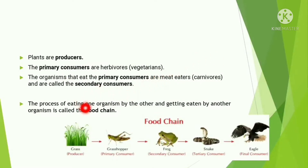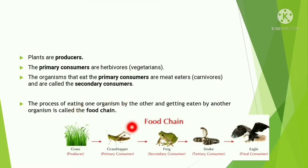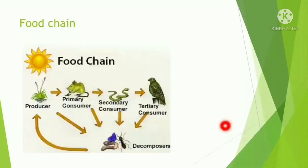The process of eating one organism by another, and getting eaten by yet another organism, is called the food chain. For example: grass is the producer; grasshopper eats the grass and is the primary consumer; frog eats the grasshopper and is the secondary consumer; then there are also tertiary consumers and final consumers. The food chain shows us how nutrients and energy are passed from one organism to another.